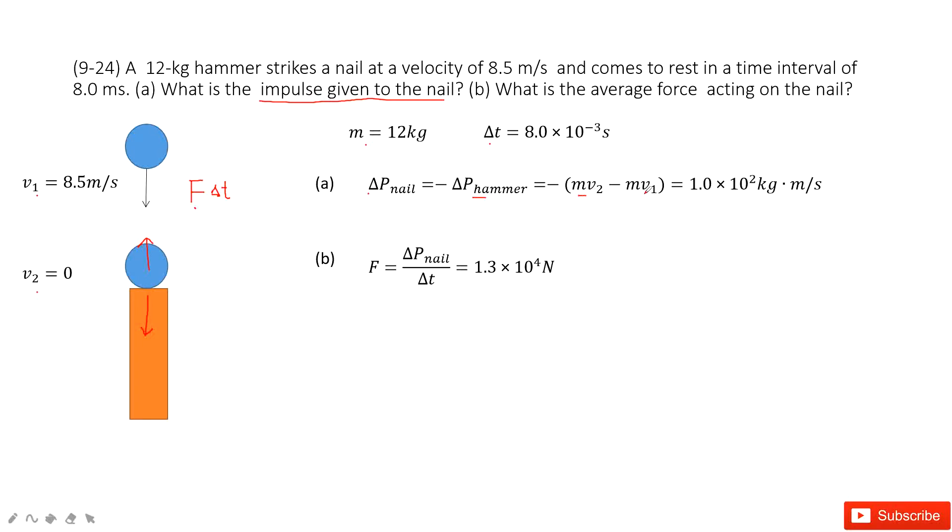Use the final momentum minus initial momentum. And then you can see the mass is given, v2, v1 is given. So you can get the final answer very easily.